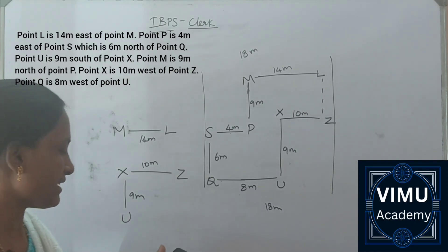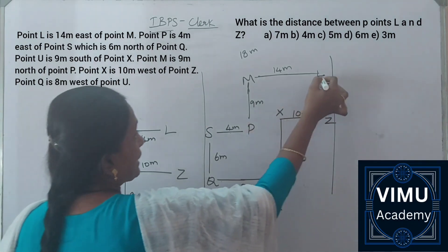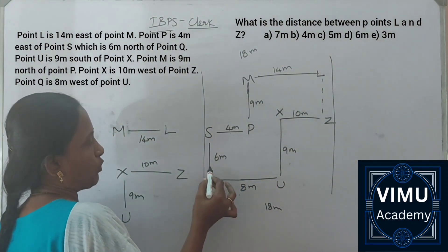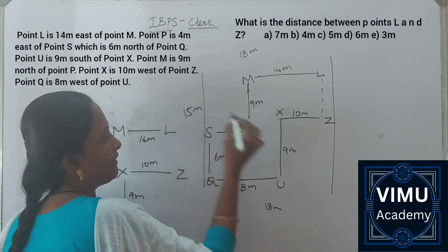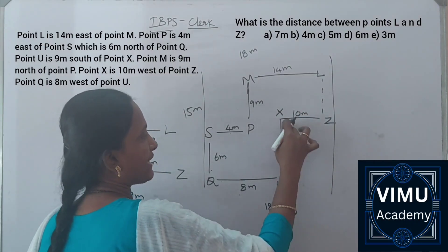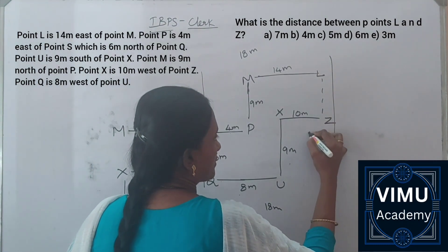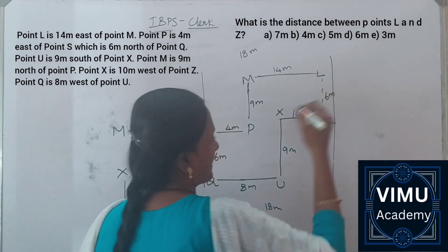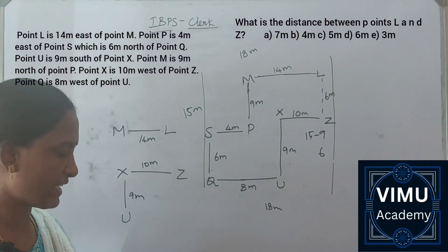First question: What is the distance between point L and Z? We measure the height - this is 6 meters, this is 9 meters, total 15 meters. This side is 9 meters, so 15 minus 9 equals 6 meters. The distance is 6 meters. Option D is your answer.